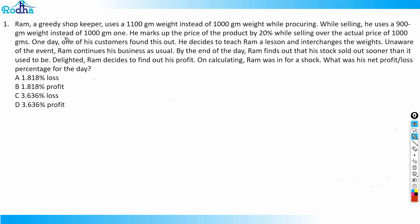Okay, hi guys. This question says that Ram, a greedy shopkeeper, uses a 1100 gram weight instead of 1000 gram weight while procuring. While selling, he uses a 900 gram weight instead of 1000 gram. He marks up the price by 20 percent over the actual price of 1000 grams. One day, a customer found this out and decided to teach Ram a lesson by interchanging the weights. Unaware of this, Ram continues his business as usual. By the end of the day, Ram finds out his stock sold out sooner than it used to.